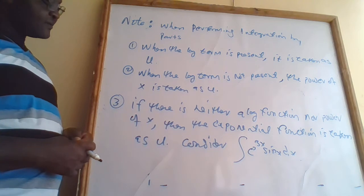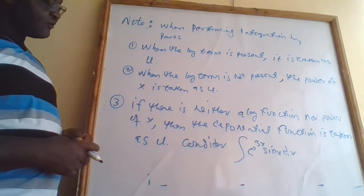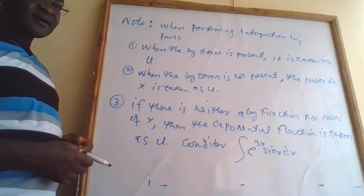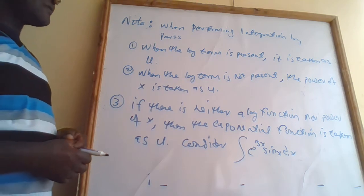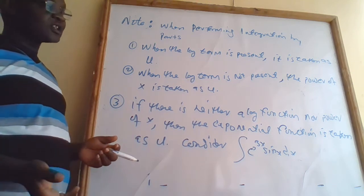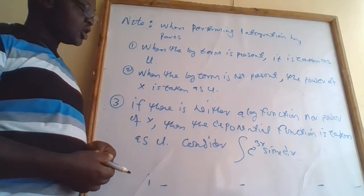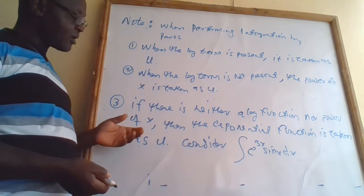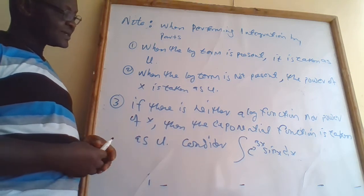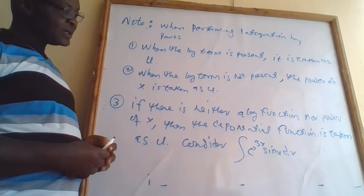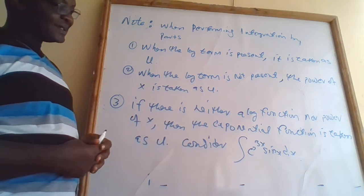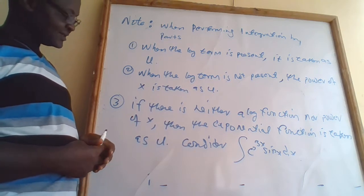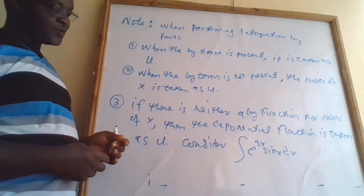Number three: if there is neither a log function nor a power of x, then the exponential function is taken as u.